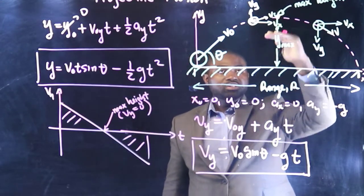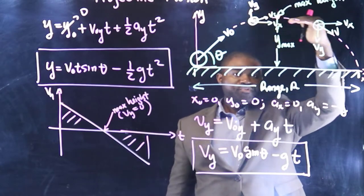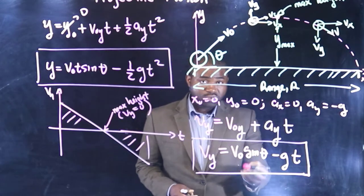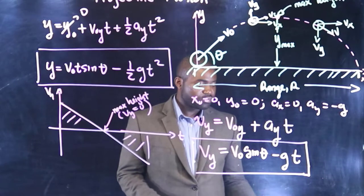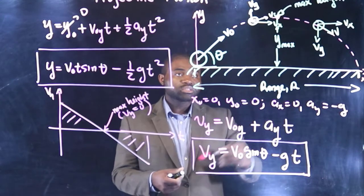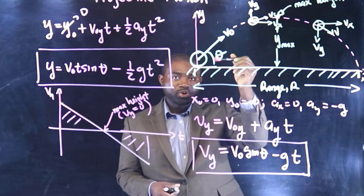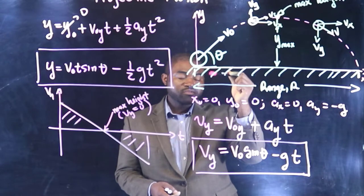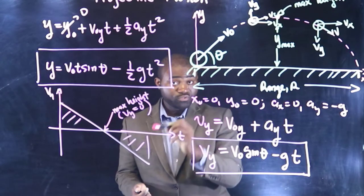...the projectile stops moving upwards but keeps on moving forward. So if I throw this, look at this carefully, if I project this plane at maximum height, what happens? It stops going upwards because the vertical velocity at that point is 0 but keeps on moving forward.